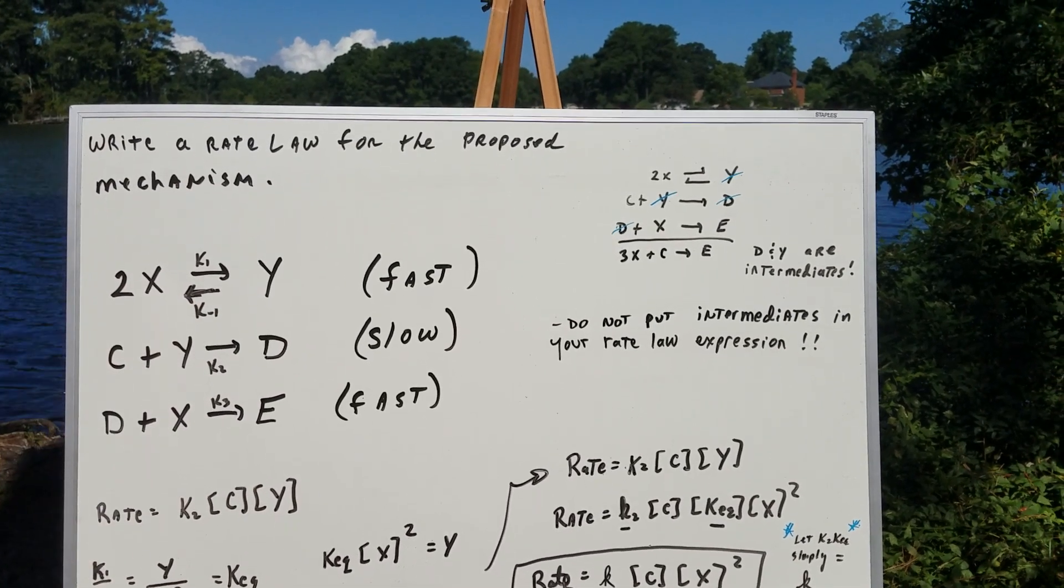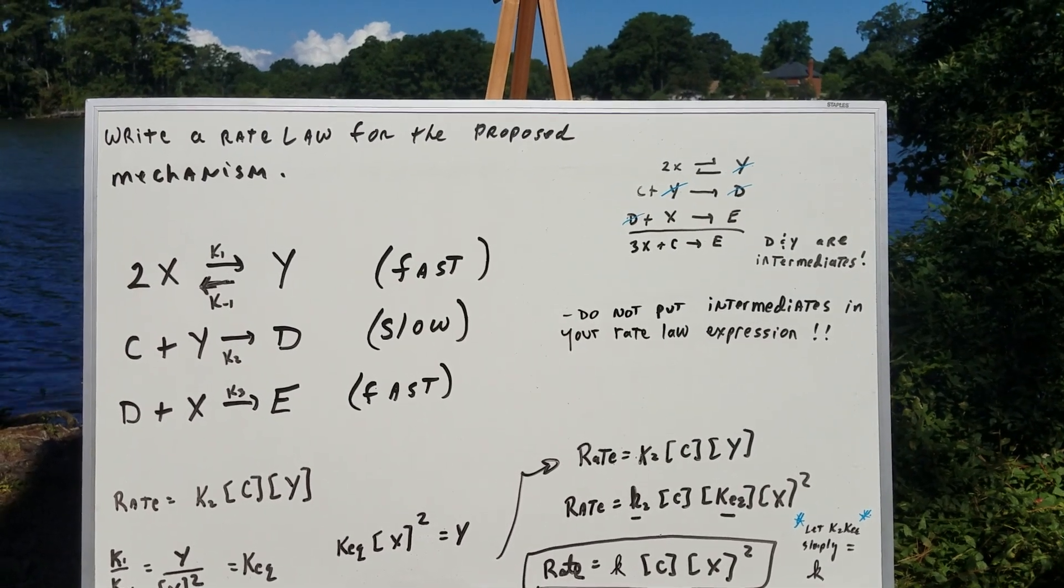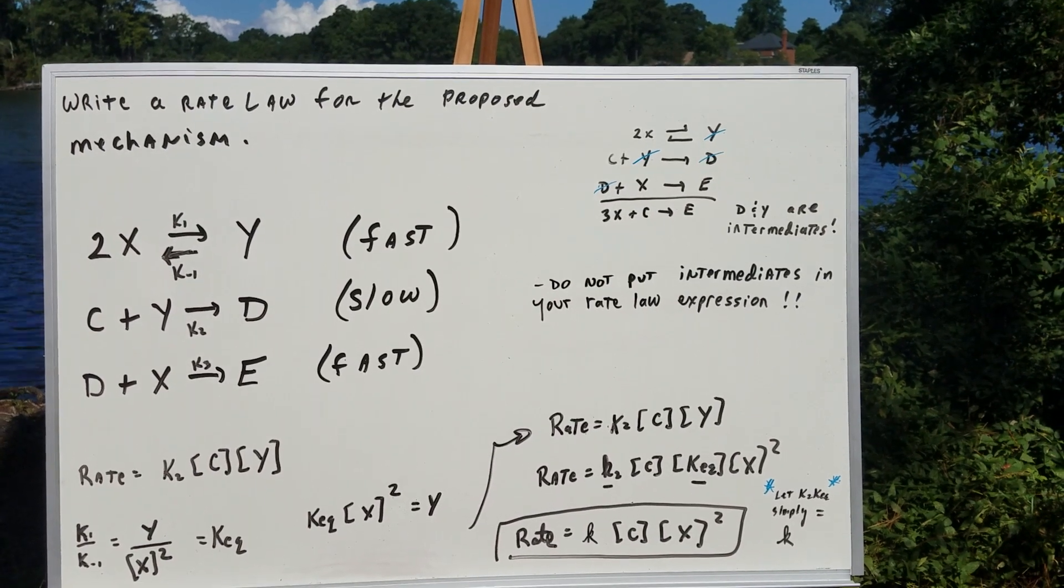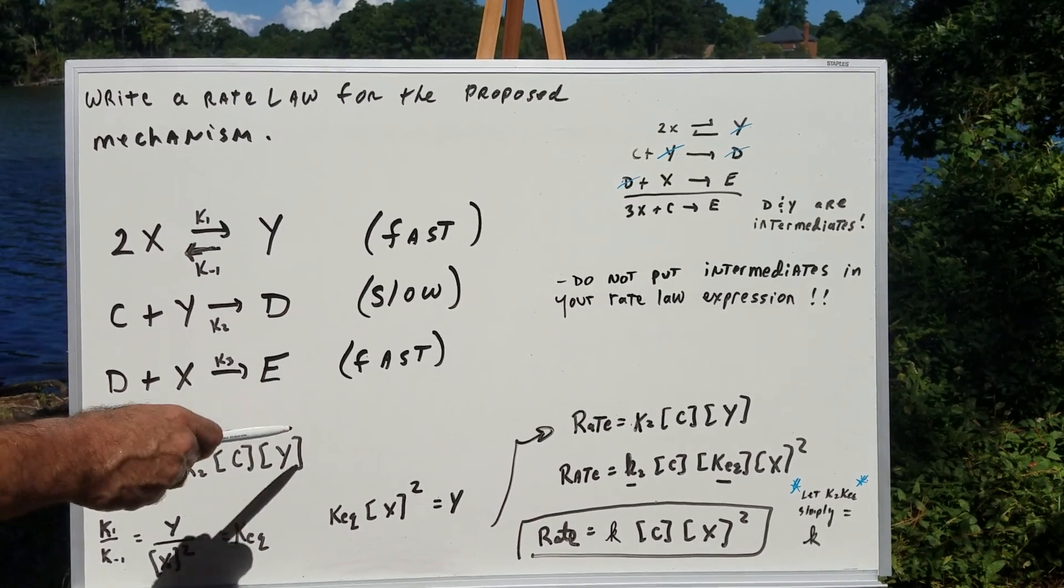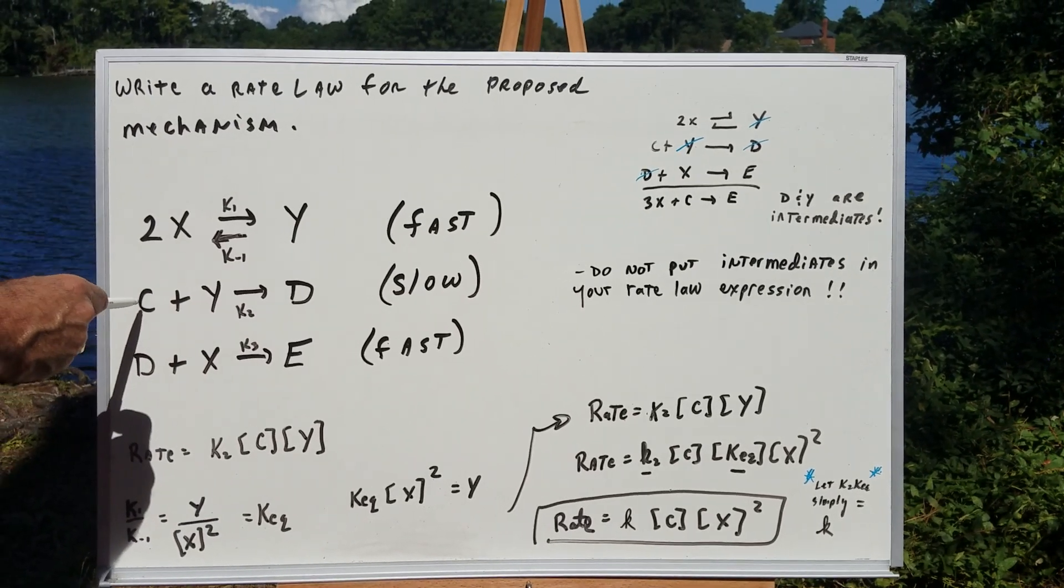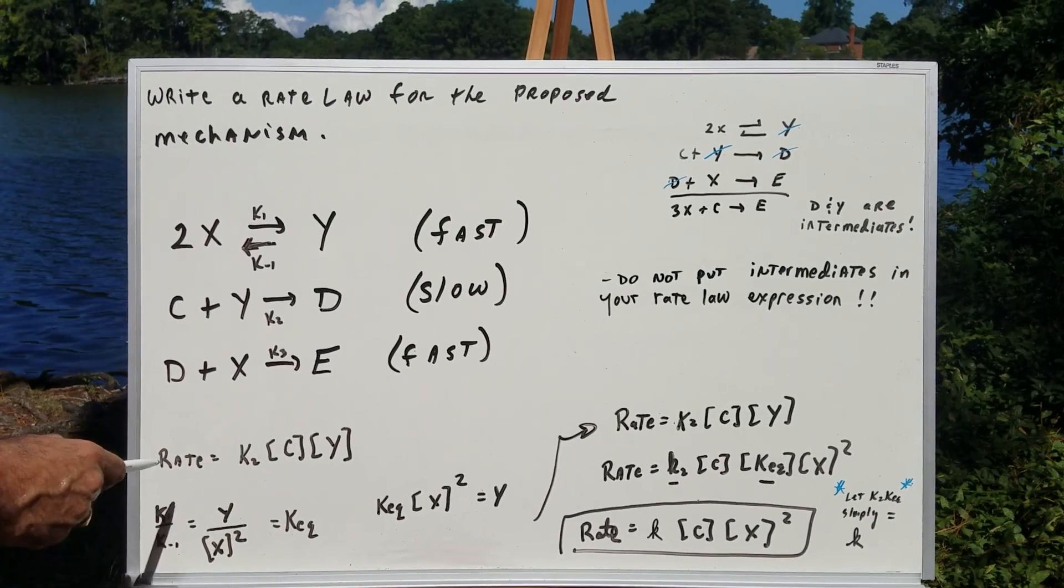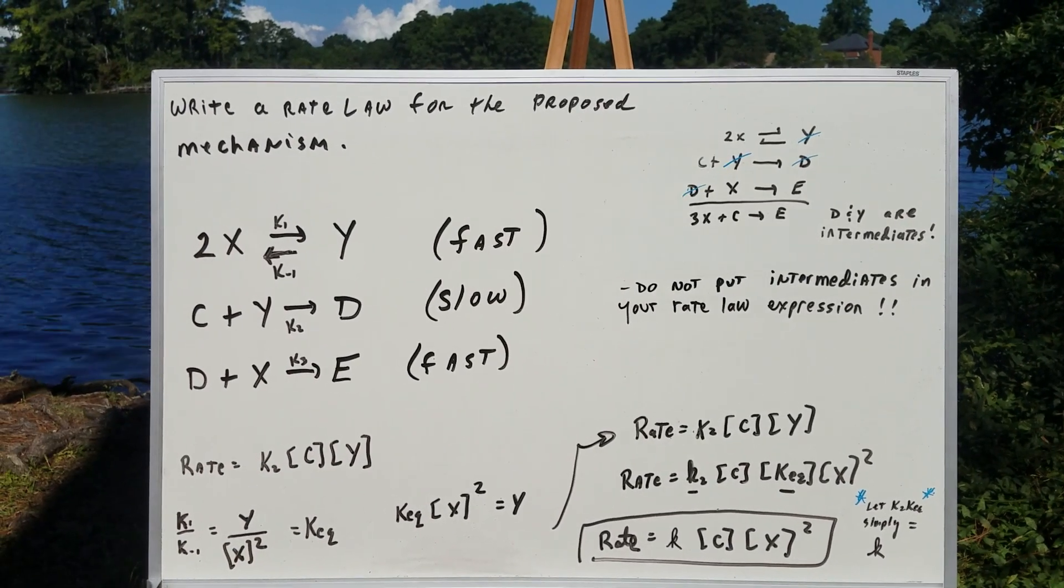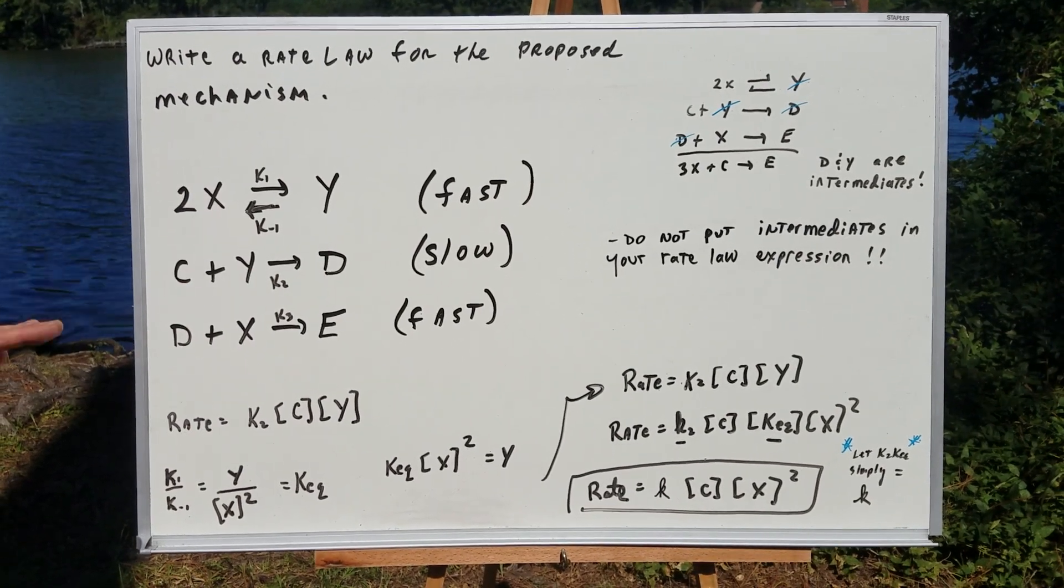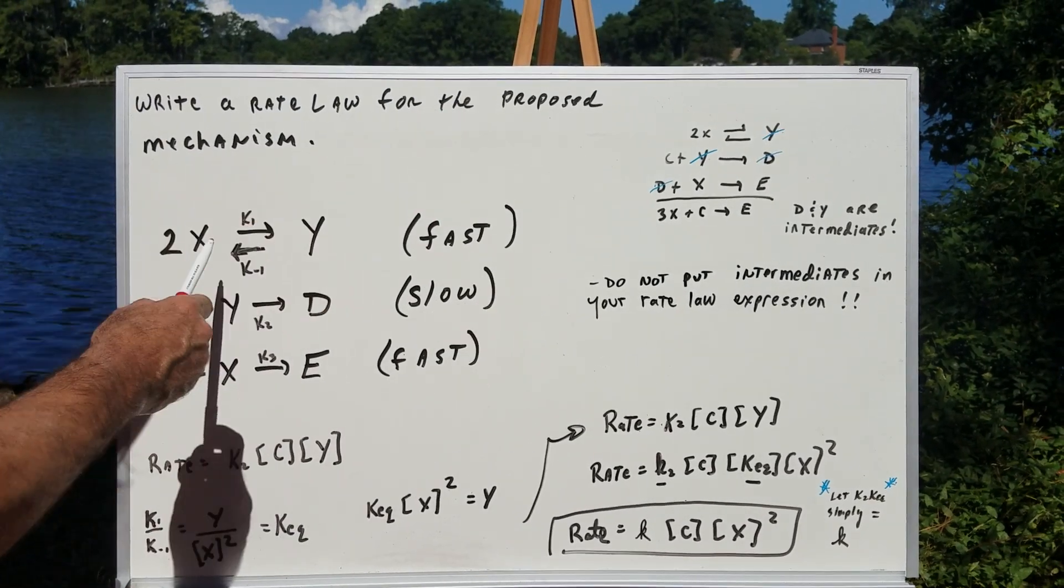And then K3 is the rate constant for the third step. The first thing you do in deriving a rate law, and this is one of the hardest questions on the DAT exam, is to first go to the slow step and write the rate law. And I say the rate equals K2 times the concentration of the reactants, which is C multiplied by Y. Now, you might think you're done. And maybe we are done because we wrote the rate law for the first step.